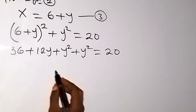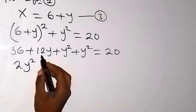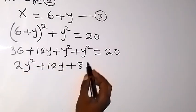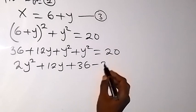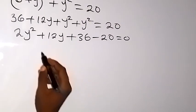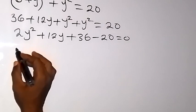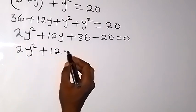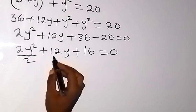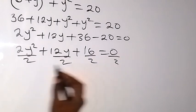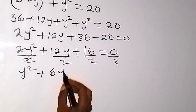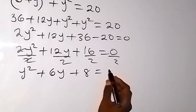When we simplify, we have y squared plus y squared, that's 2y squared. Rearranging, we have 2y squared plus 12y plus 36 minus 20, which equals 0 — we are forming a quadratic equation. This gives us 2y squared plus 12y plus 16 equals 0. We can divide everything by 2, leaving y squared plus 6y plus 8 equals 0.